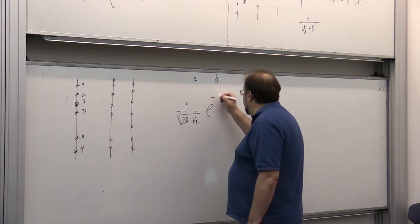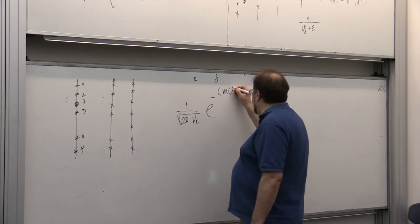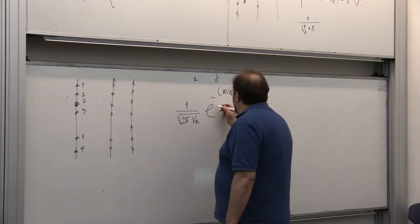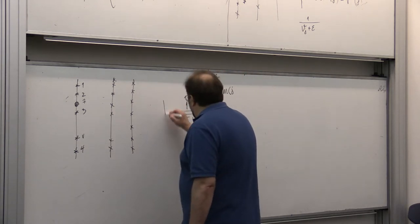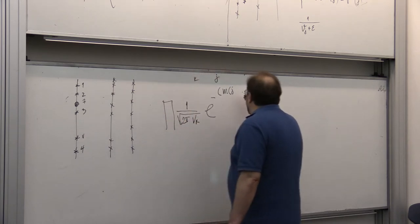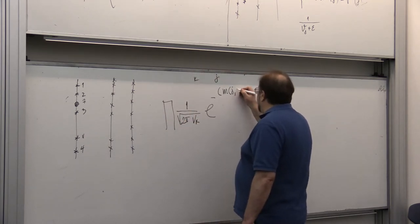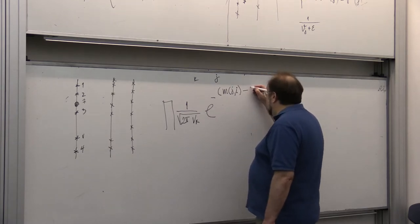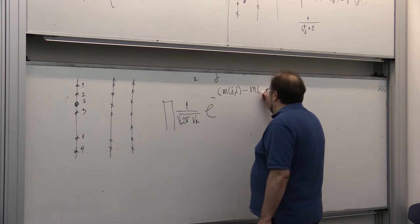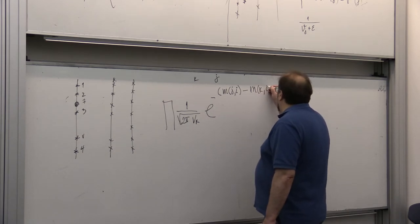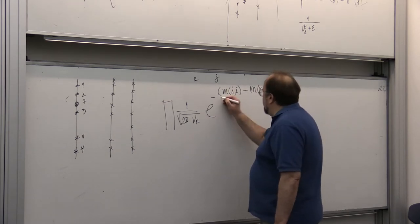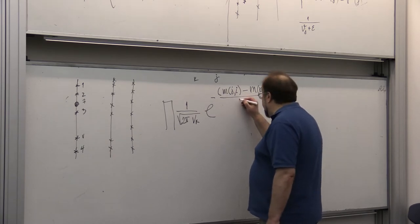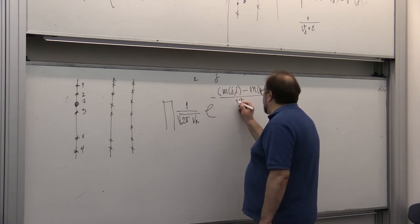And then e to the minus, and then measurement of jades, and then the product of all of these. Measurement of jade sensor at i minus my measurements at i squared divided by my variance, two times my variance.